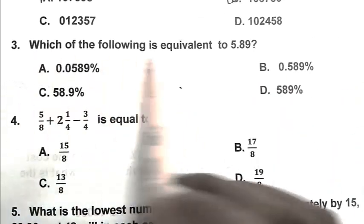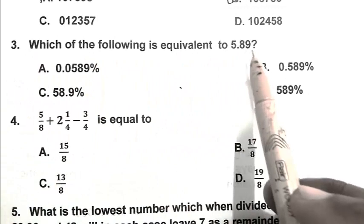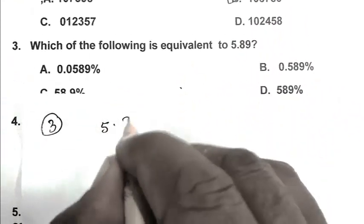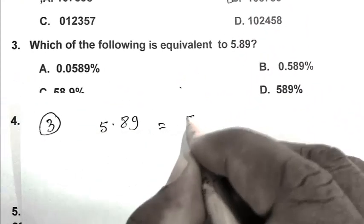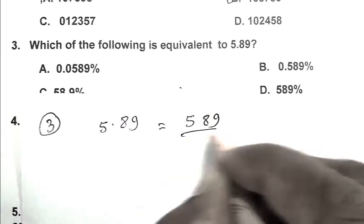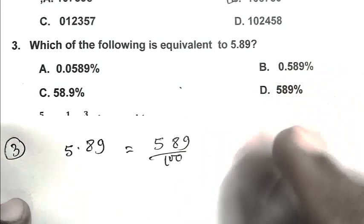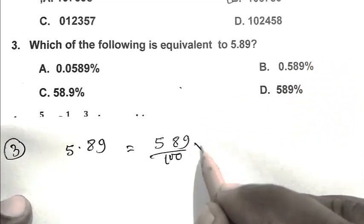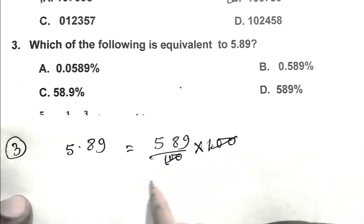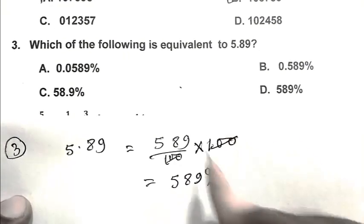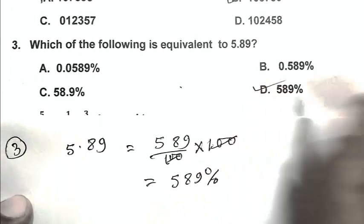Question number 3: Which of the following is equivalent to 5.89? We write 5.89 as 5.89 upon 100. To convert to percentage, multiply by 100. Answer is 5.89 percent. D is the right answer.